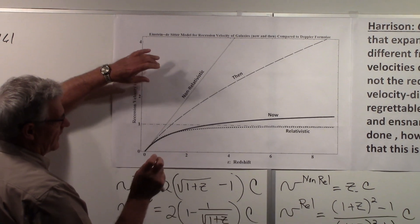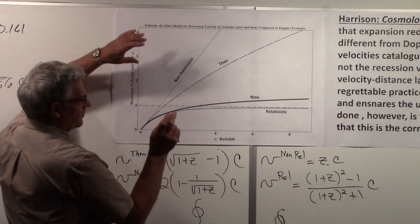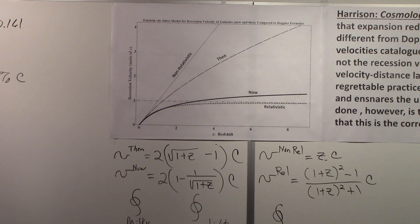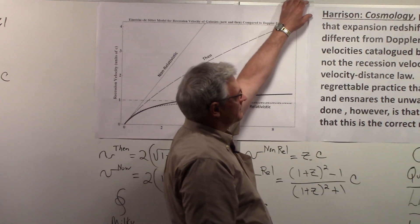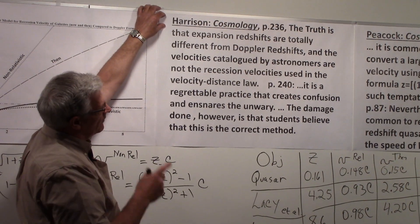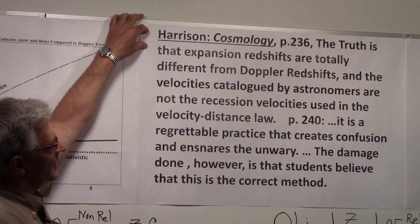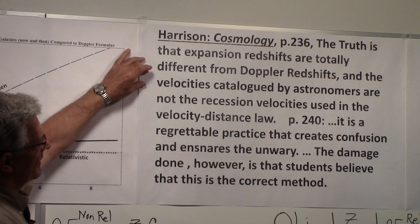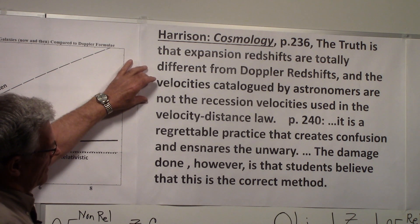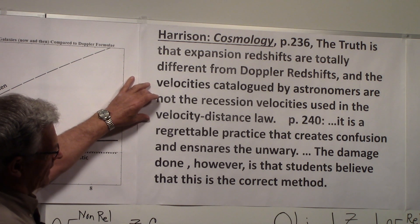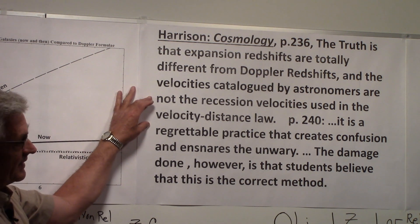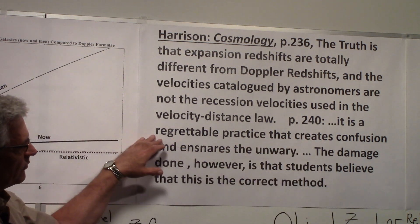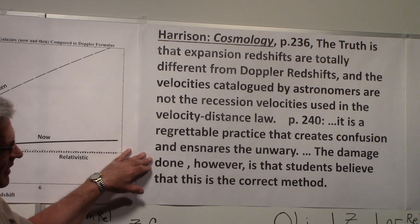So it's a mistake to think of the redshift in terms of the Doppler formula. And here's a couple interesting quotes. There's a book called Cosmology by Harrison. If you go to page 236, he says, 'The truth is that expansion redshifts are totally different from Doppler redshifts, and the velocities cataloged by astronomers are not the recession velocities used in the velocity-distance law.' That's the Hubble law we haven't talked about that yet.